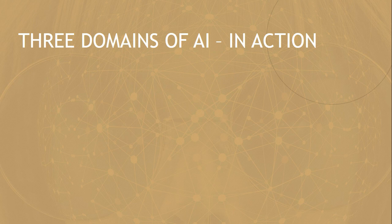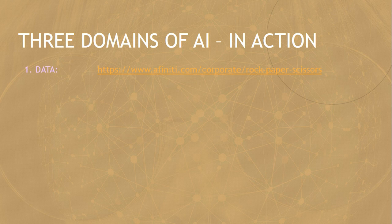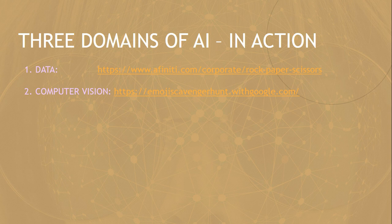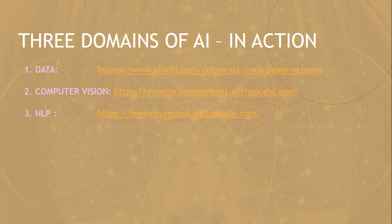I'm coming to the conclusion of today's class. Before we leave, there are three domains of AI which I would like you to explore on these websites. For data, you can go to affinity.com and play the rock, paper and scissor game. Another one is computer vision — I'd like you to play this game on your mobile. The third one is natural language processing — this is a mystery animal with google.com. All these links you are going to find in the description. I request you to explore these three domains of artificial intelligence in action till we meet again. Please subscribe to my channel. That's all for today. Goodbye.